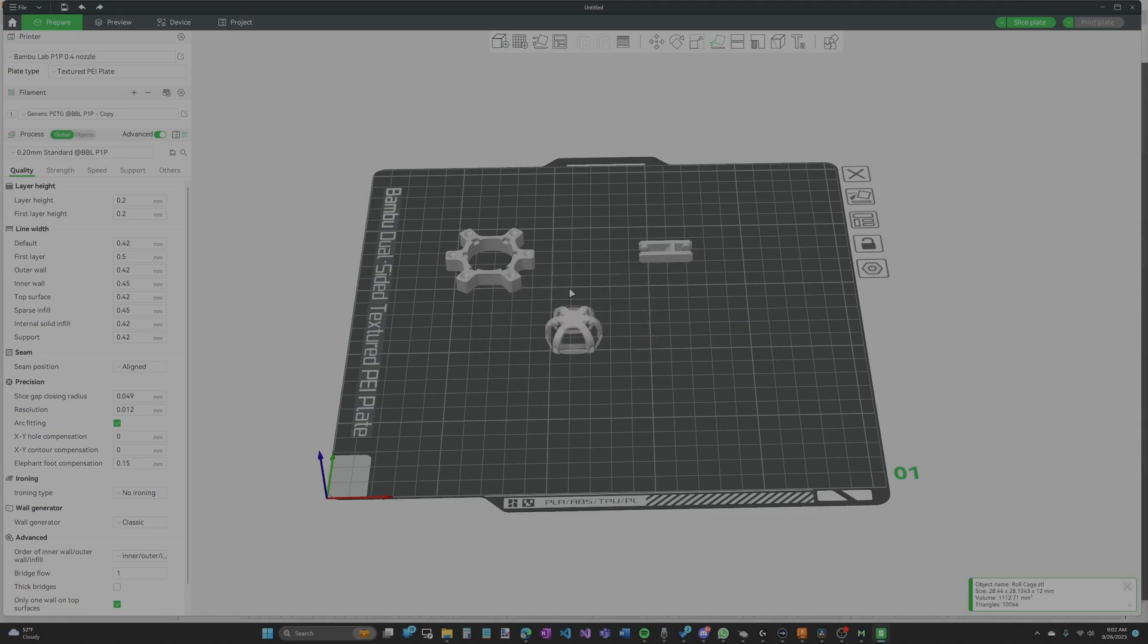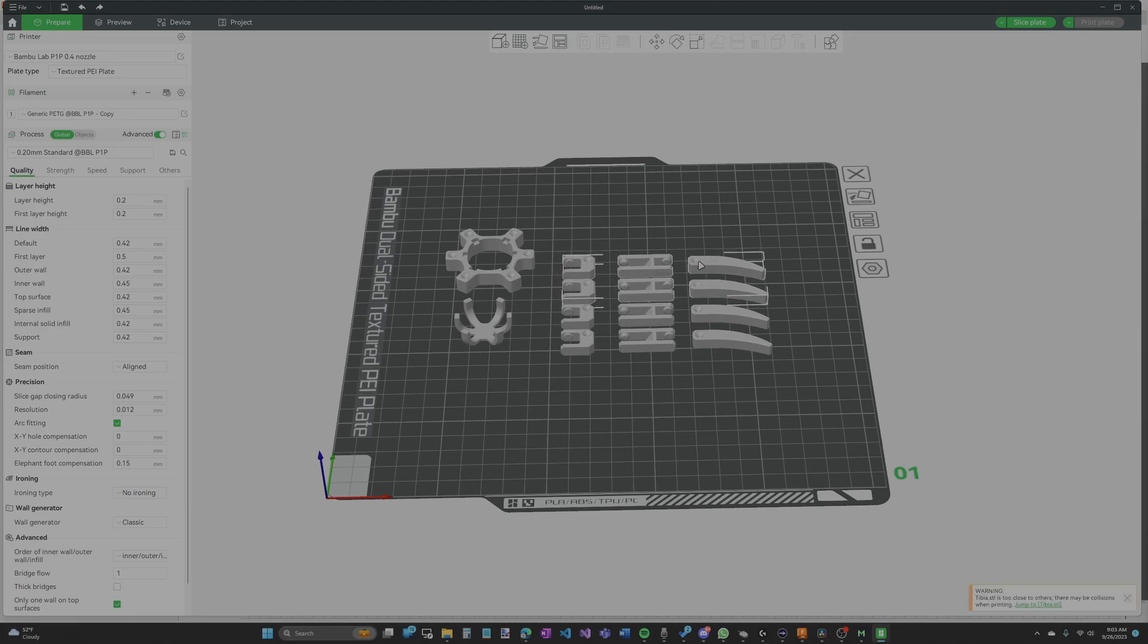The frame and femur should be right side up, the roll cage should be upside down, and the coxa and tibia should be on their side. Duplicate the coxa, femur, and tibia until there are 6 each and you should be good to print.